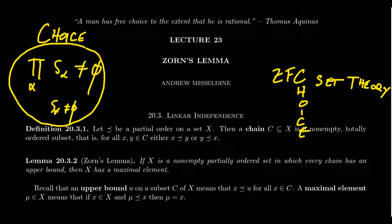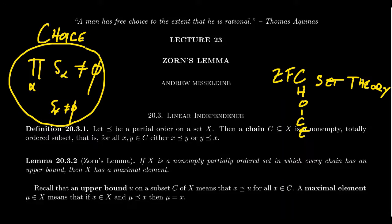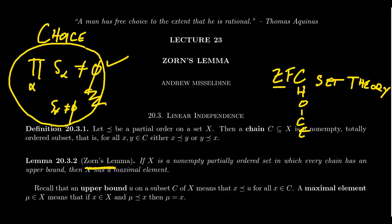What does this have to do with Zorn's Lemma? In the framework of ZF set theory, the axiom of choice is logically equivalent to Zorn's Lemma. If you accept some version of choice resembling the existence of choice functions, you could prove Zorn's Lemma as a theorem of ZFC. But they are logically equivalent — you could go the other way around, adopt Zorn's Lemma as your version of the axiom of choice, and use it to prove the existence of choice functions. You can't separate the two.